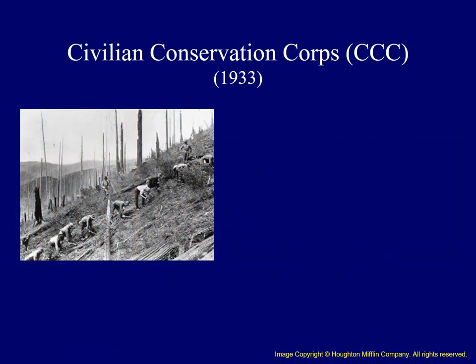Another New Deal agency that provided relief in the form of jobs was the Civilian Conservation Corps. In many ways, this was one of Franklin Roosevelt's favorite programs because it put people to work and helped the environment at the same time. Workers planted trees, built campgrounds, fish hatcheries, and developed hiking trails. The hours were long, the work was hard, and the pay was about $35 a month, but at least people had three square meals and a roof over their head.